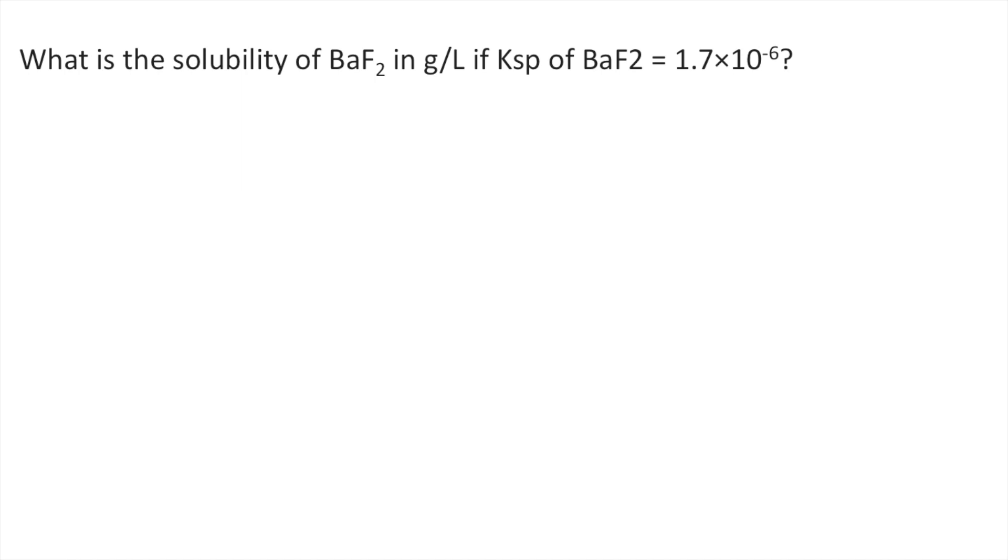The first thing you're going to do is write the equilibrium for the dissociation of BaF2. So that's BaF2 solid, which is in equilibrium with its ions. We have the barium ion, Ba²⁺ aqueous, plus the fluoride ion. There are two fluoride ions because it's BaF2.